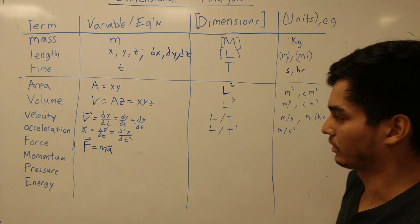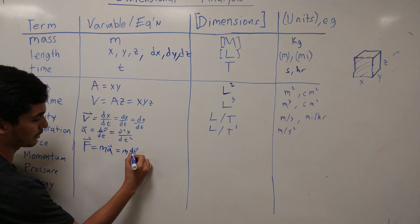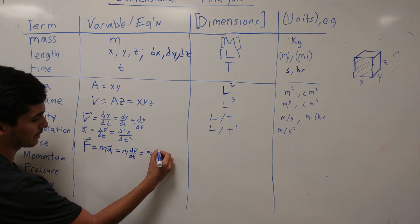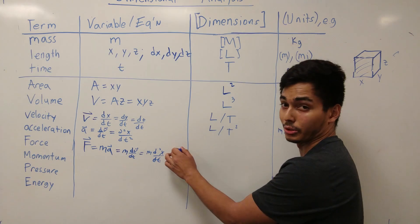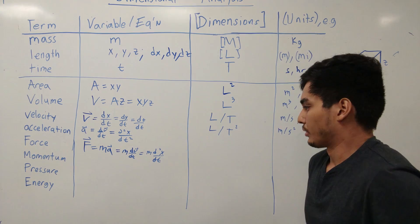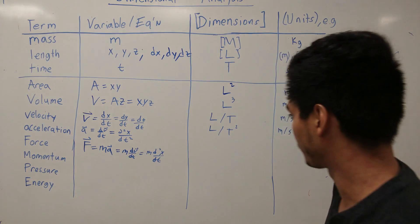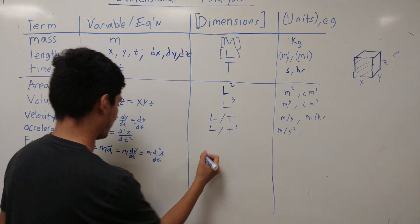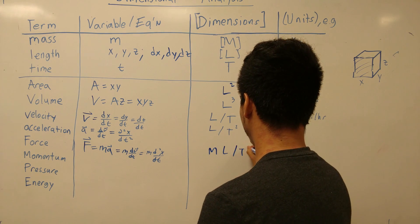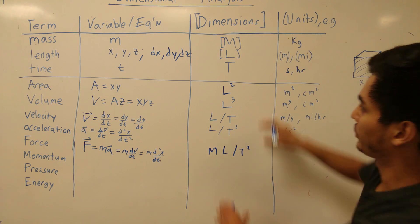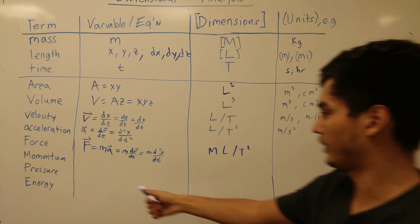For force, F = m·(dv/dt), or equivalently mass times the second derivative of displacement with respect to time. The dimensions are mass times length per time squared — combining all three base dimensions in one term. Typical units are Newtons, which is kilograms times meters per second squared.